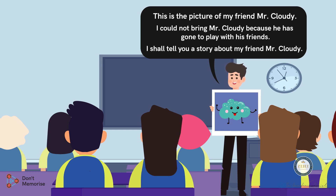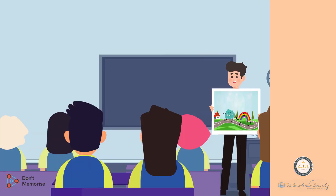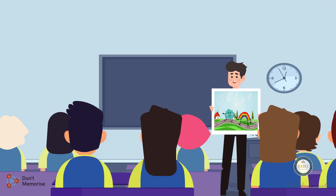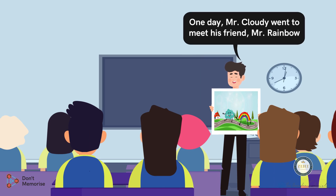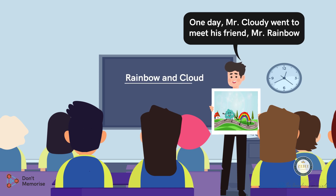Now, we will initiate the story by displaying the picture composition that we had arranged earlier and say, 'One day Mr. Cloudy went to meet his friend Mr. Rainbow.' After this, write the words Rainbow and Cloud on the board.